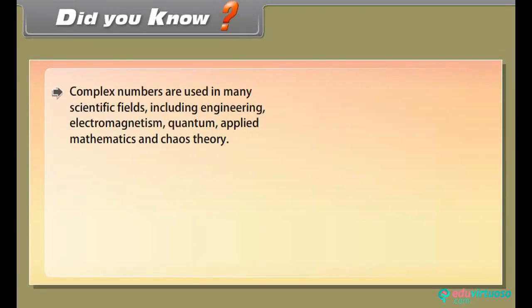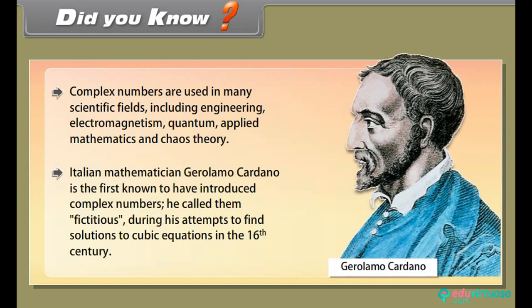Did you know? Complex numbers are used in many scientific fields including engineering, electromagnetism, quantum mechanics, applied mathematics, and chaos theory. Italian mathematician Gerolamo Cardano is the first known to have introduced complex numbers — he called them fictitious during his attempts to find solutions to cubic equations in the 16th century.